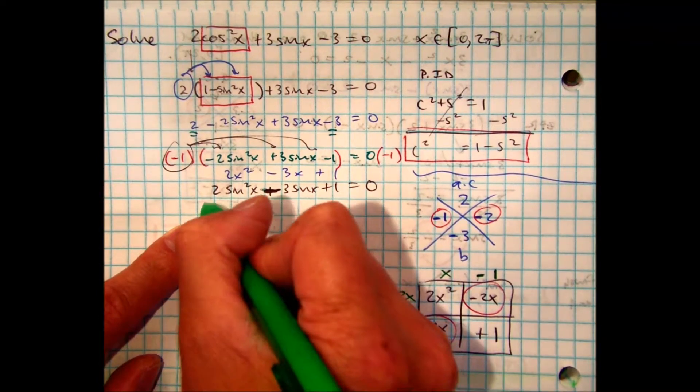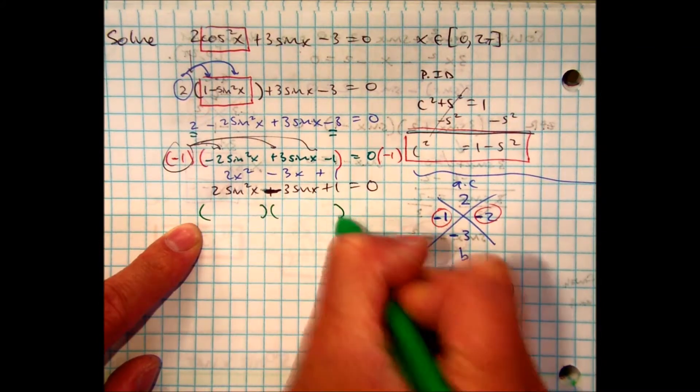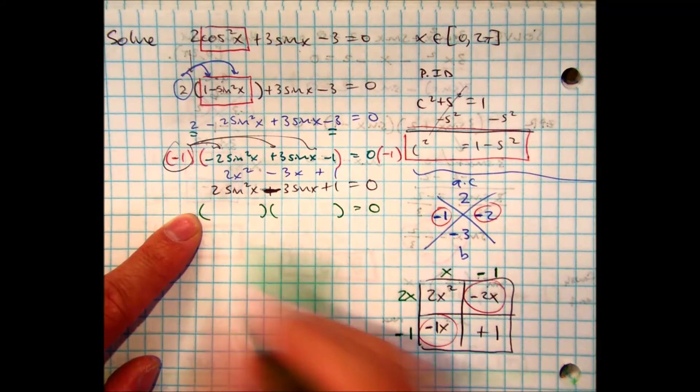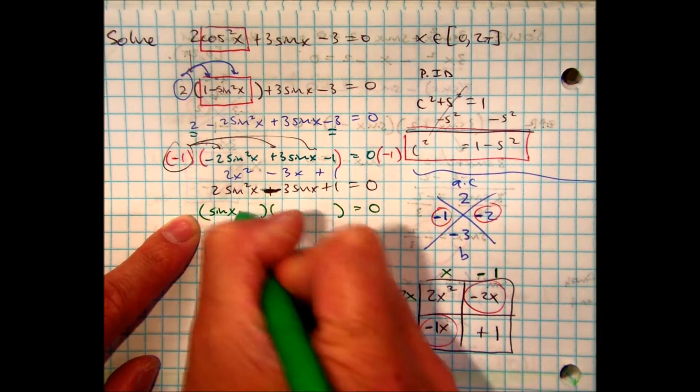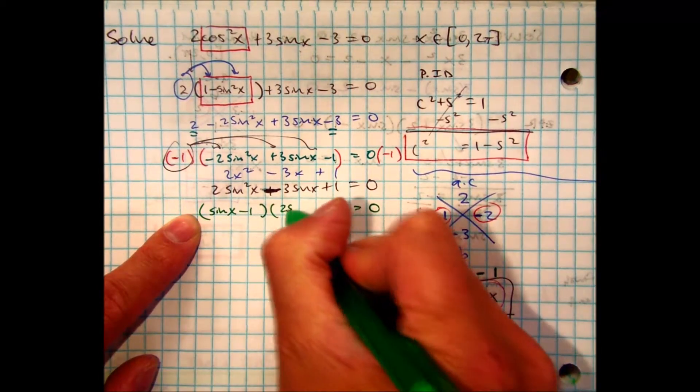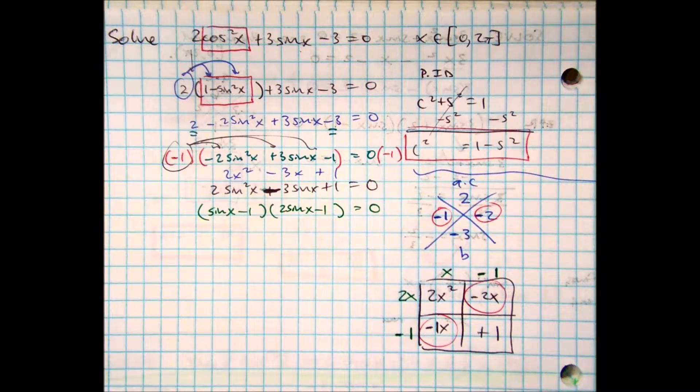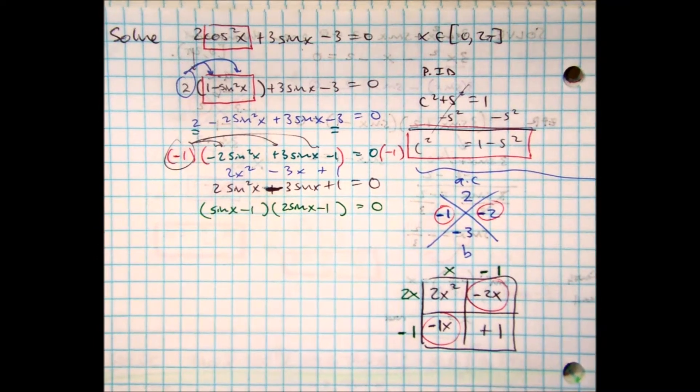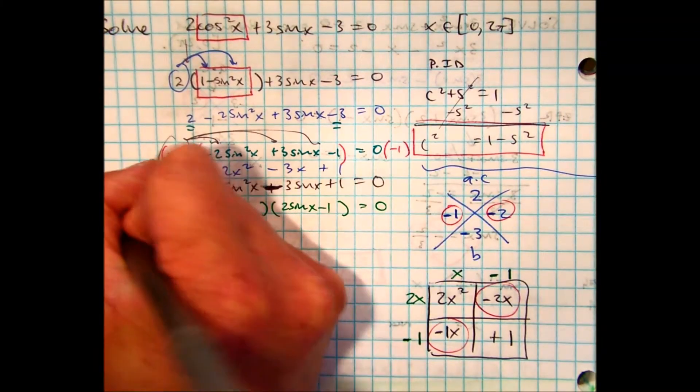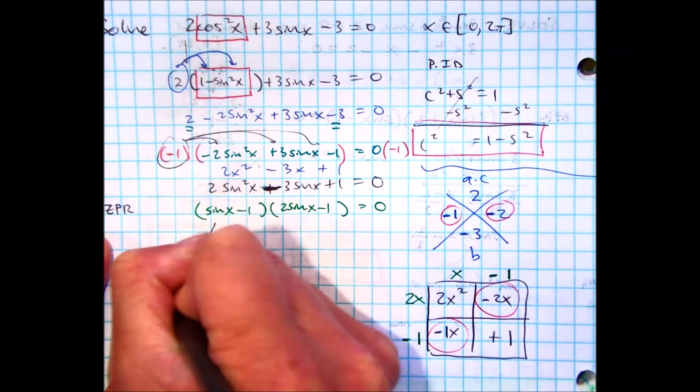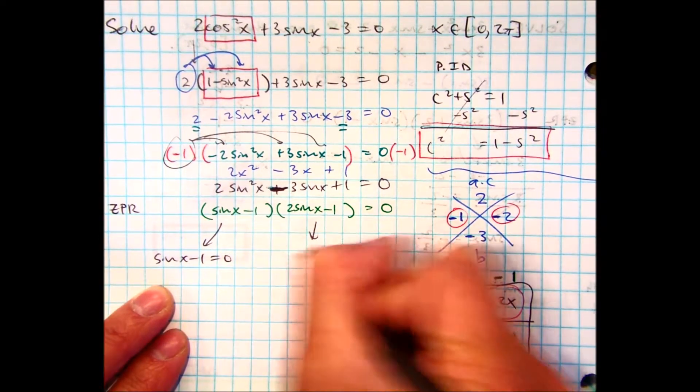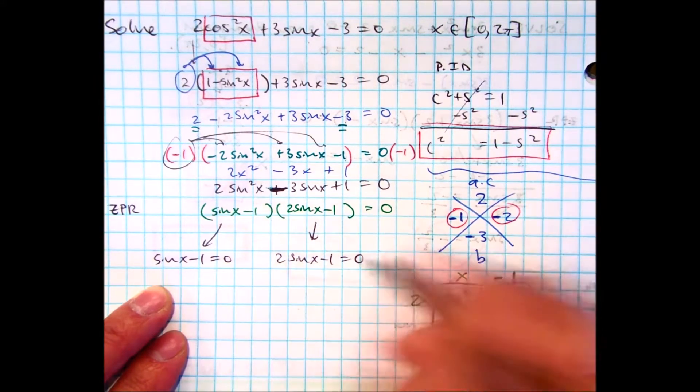So, now I can rewrite this as my factors. Let's put back sine in there. So, I have sine of x minus 1, and 2 sine x minus 1. Class, can we split it now? Let's split them. Because it's equal to 0, I can apply the 0 product rule. So, sine of x minus 1 equals 0, and 2 sine x minus 1 equals 0.